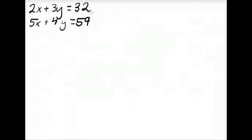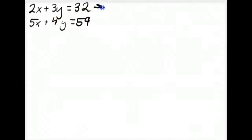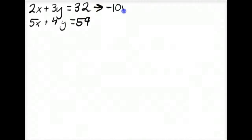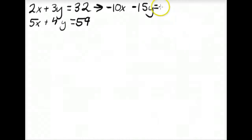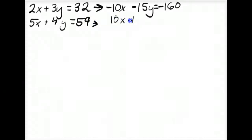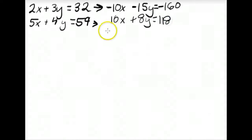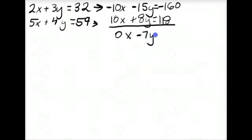We're going to want to eliminate x. To eliminate x, we first multiply the second equation by 2, then multiply the first equation by negative 5, and then add the two together, and that will eliminate x. So if we multiply the first equation by negative 5, we get negative 10x minus 15y equals negative 160. And if we multiply the second equation by 2, we get 10x plus 8y equals 118. Adding these equations together, we get 0x minus 7y equals negative 42.